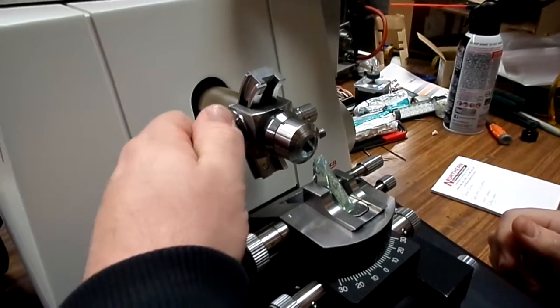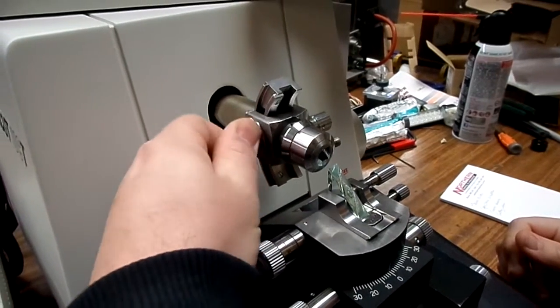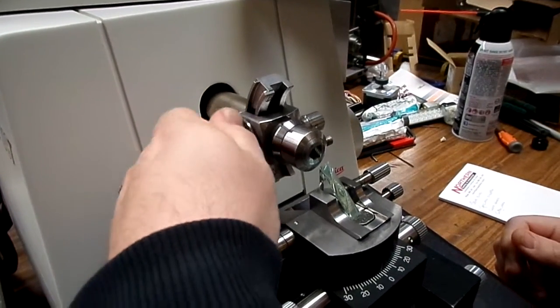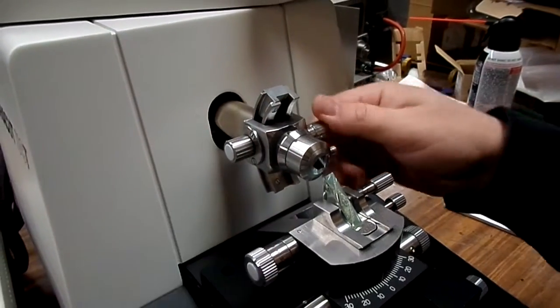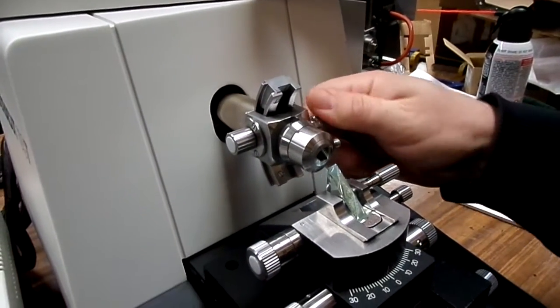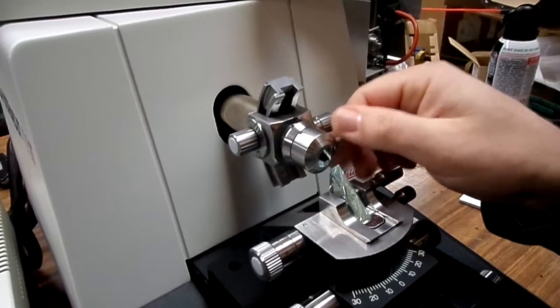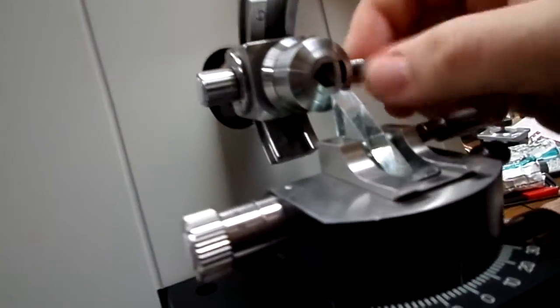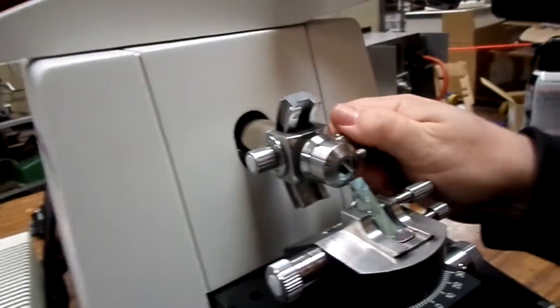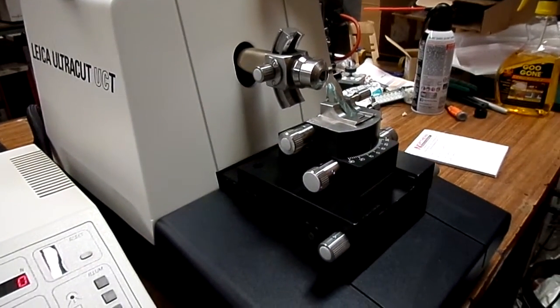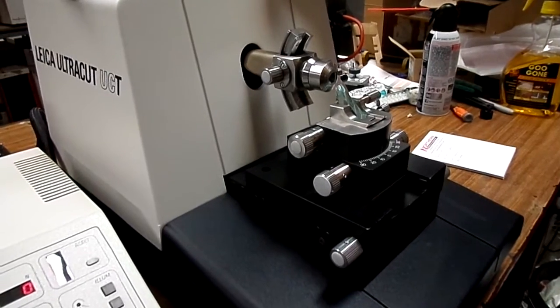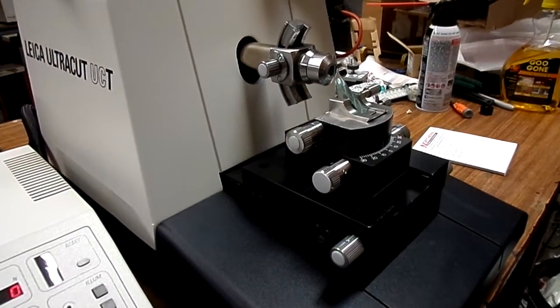Then you have your adjustment on the angle of the specimen clamp. It's pretty self-explanatory. You adjust that. If you want to spin it, you can do it like that. You put your specimen in there, tighten this, and that's it for the adjustment of the specimen clamp and the blade holder on the microtome.